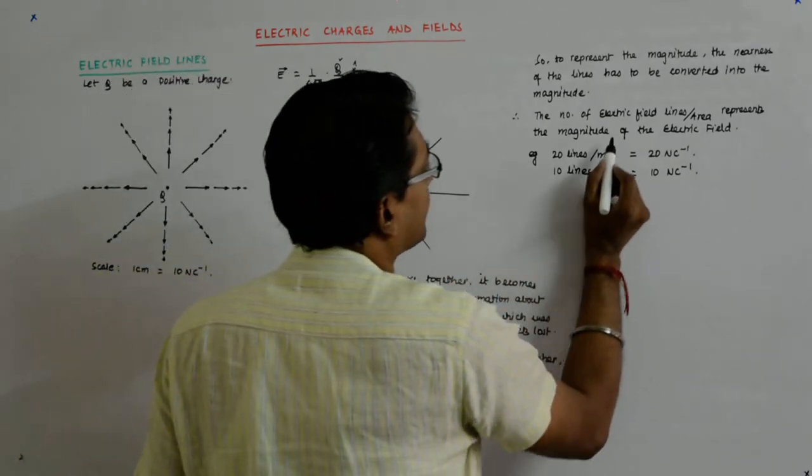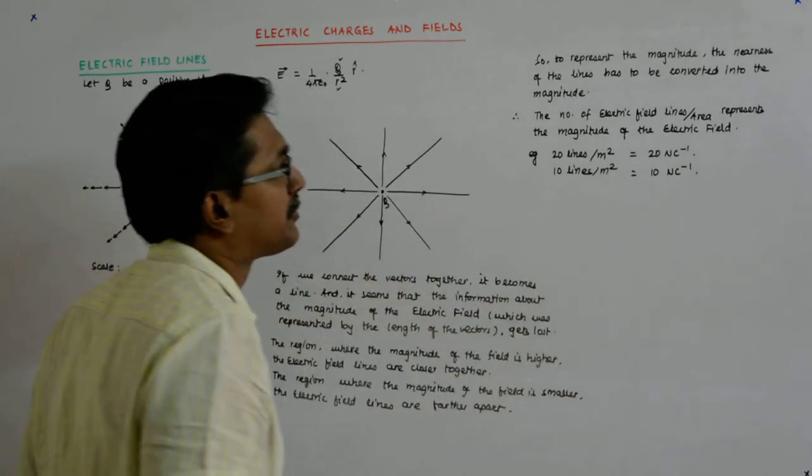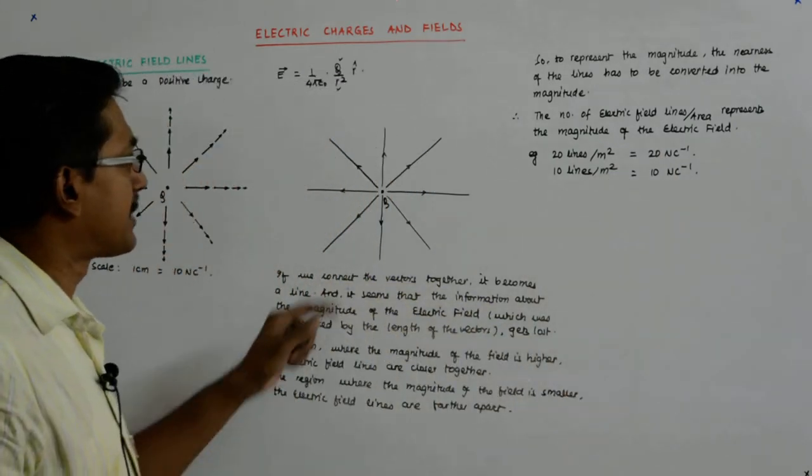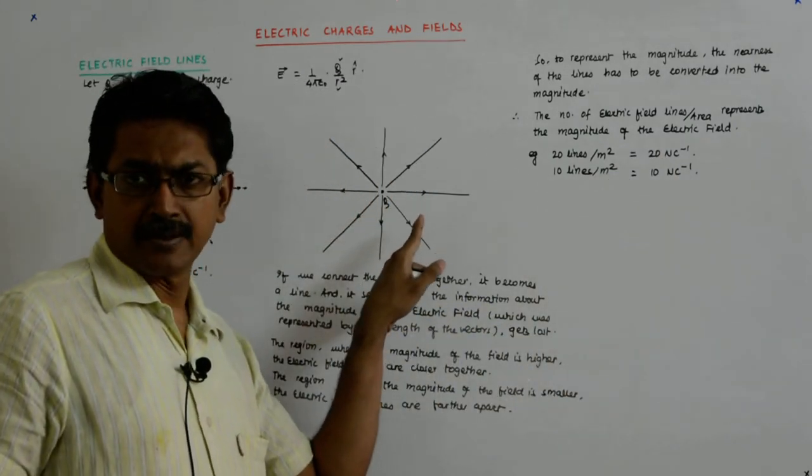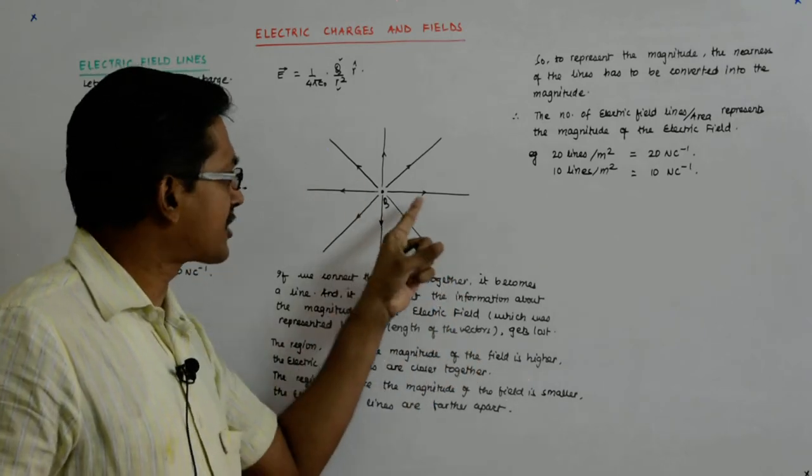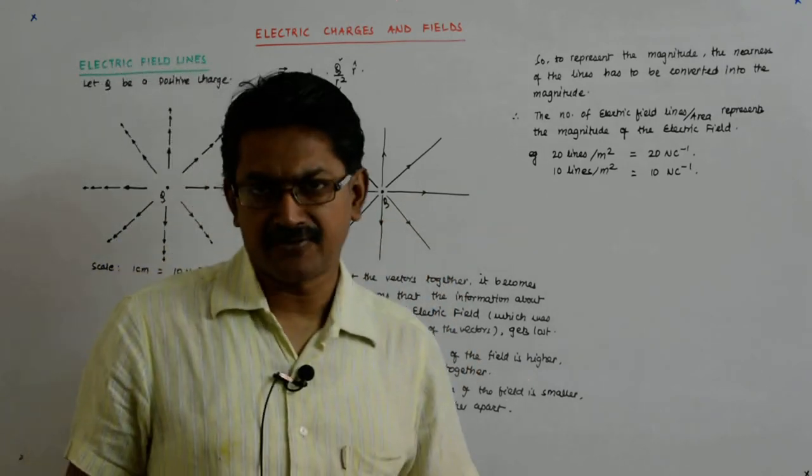So it is the number of lines, electric field lines per unit area which represents the magnitude now and the direction is given by the arrow on the electric field line.